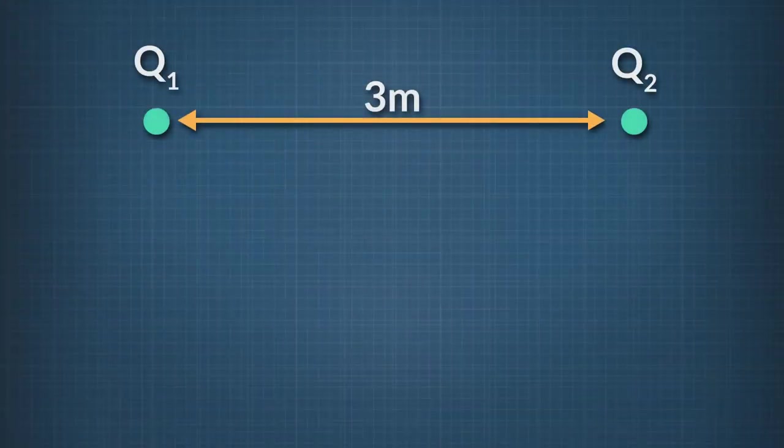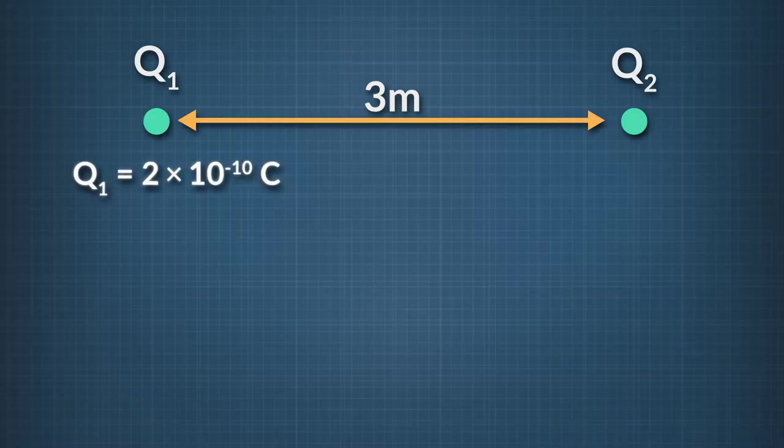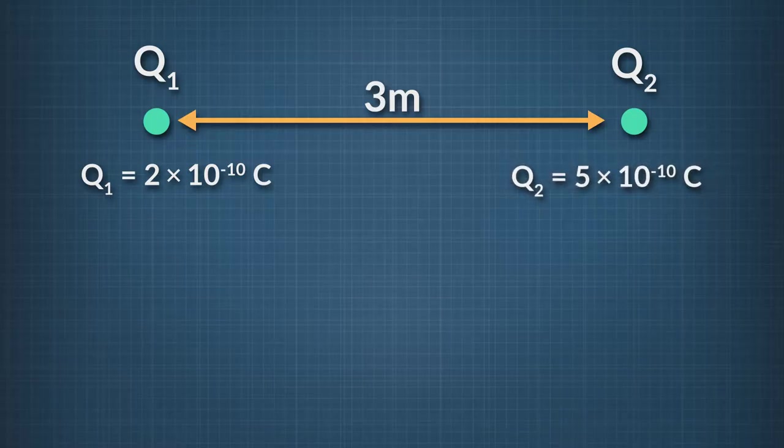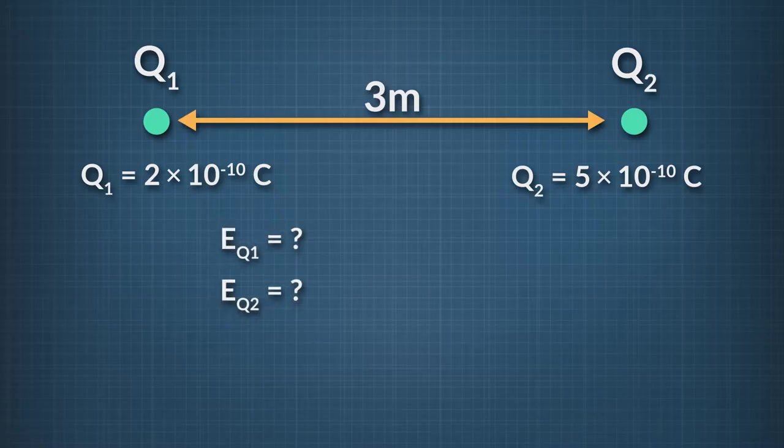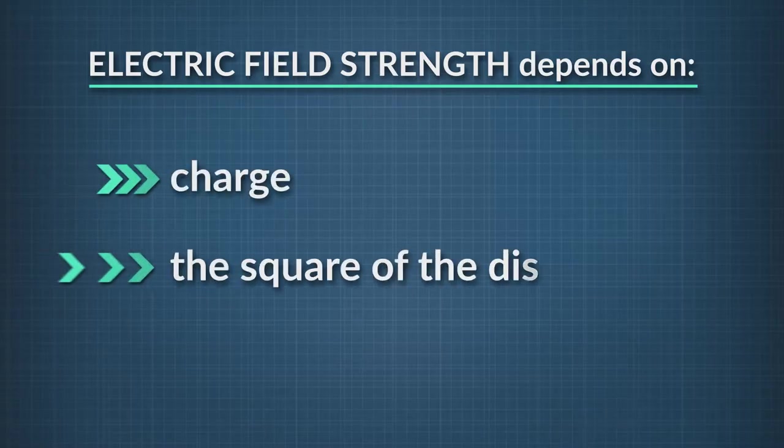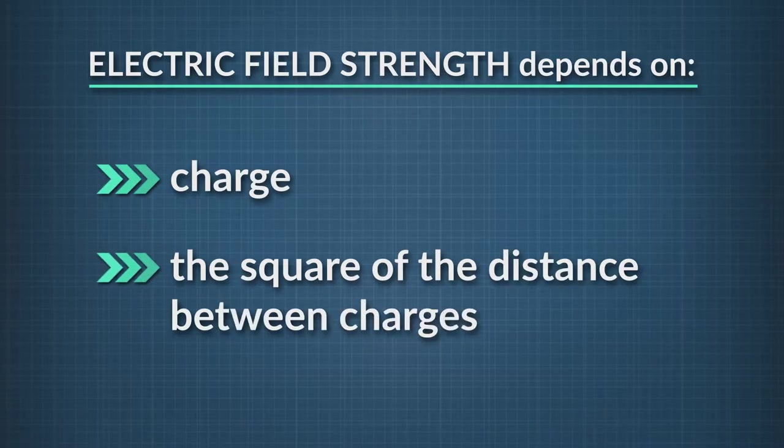Now let's look at Coulomb's Law in a problem. We've got two charges, each three meters apart. The first charge is 2 times 10 to the minus 10 Coulombs. The second charge is two and a half times that. We want to know what's the electric field at each charge due to the other, and what's the electric force between the two? We know that the strength of the electric field depends on charge and the square of distance. The equation we'll be using is this.